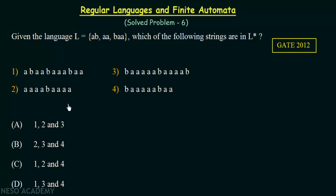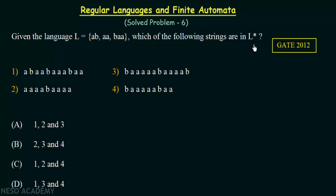We need to find out which of the strings given in the options actually belongs to this language L. We have options A, B, C, and D where there are some combinations of these string numbers. To find out, we will analyze each option one by one and see if we can form those strings by combining strings from the language L given in the question.